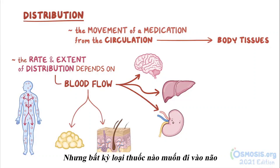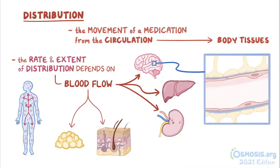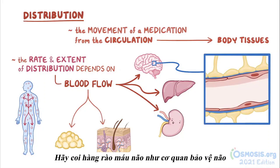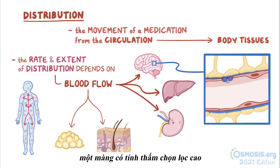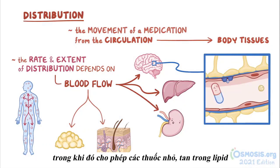For any medication to enter the brain itself, it has to go through the so-called blood-brain barrier, which is strictly regulated. Think of the blood-brain barrier as the brain's bouncer — a highly selective membrane that turns away large, water-soluble medications floating around in the blood, while letting in smaller, fat-soluble medications.